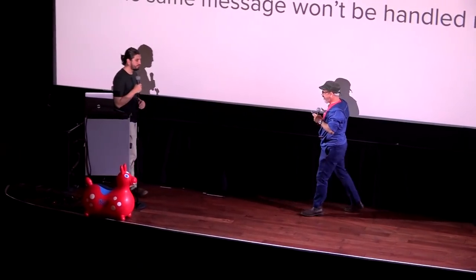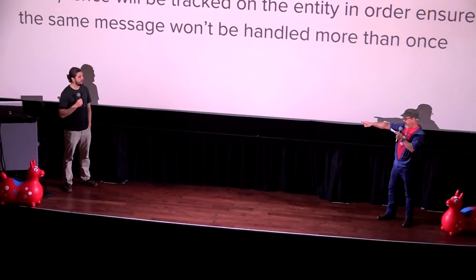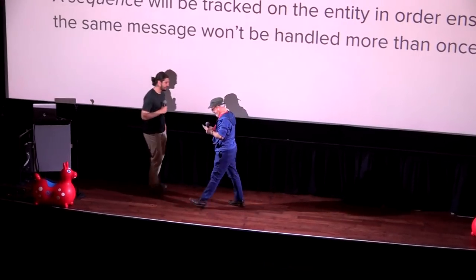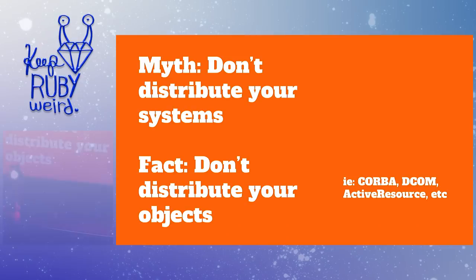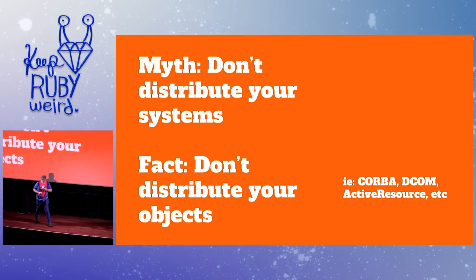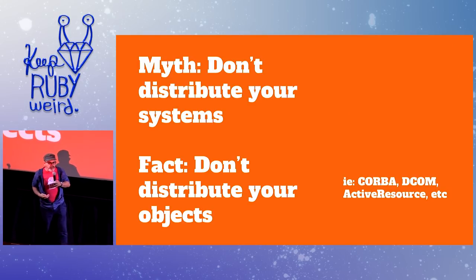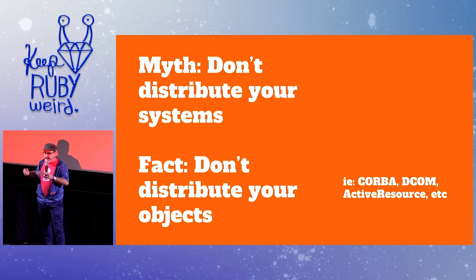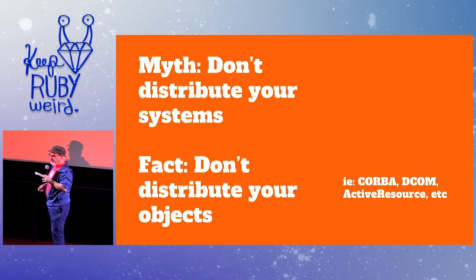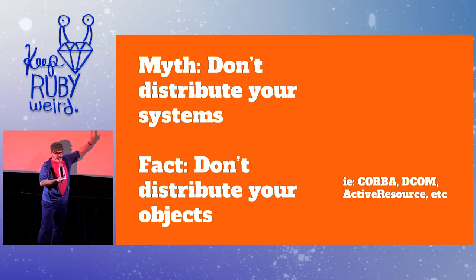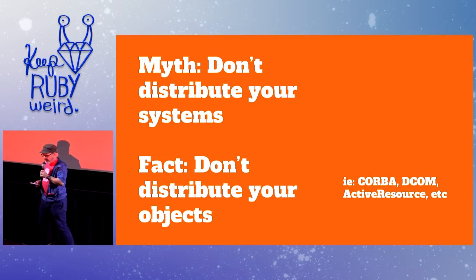Nathan: "A very important and wise man once said the first law of distributed systems is not distributing your systems." Speaker: "The real first law of distributed systems is to not distribute your objects. There's no law that says don't distribute your systems — it says if you're going to build distributed systems, you need to know the difference between a distributed object and a distributed system. We had these things in the old days called distributed object brokers — CORBA was one, DCOM was another. Rails also developed Active Resource, made it a default gem, and then two years later removed it as a default gem, as one might expect."